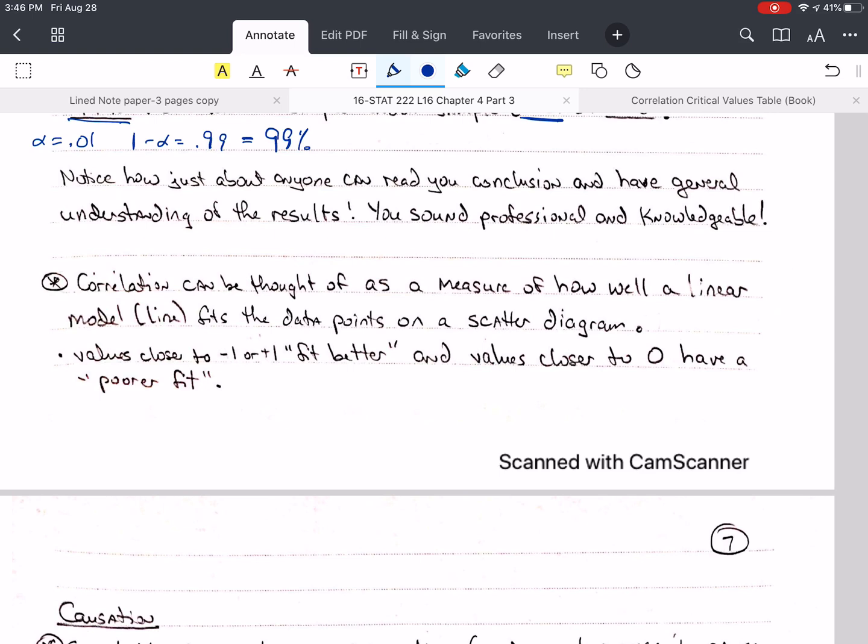So the correlation can be thought of as a measure of how well a linear model, and that's a straight line, fits the data points on a scatter diagram. Again, the closer to negative 1 or positive 1, the fit is better. And for values of R that are closer to 0, they have a poorer fit. So the closer to 1, let's do a positive this time, the closer it is to 1, not in the center of the data, the less variation or distance in the vertical direction that these points are from the line.